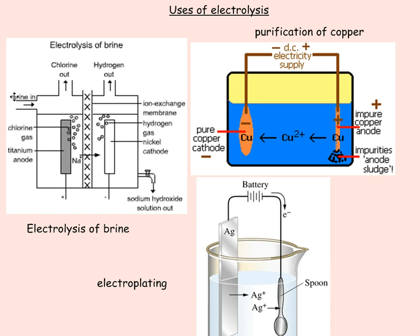Here we've got the three different types of electrolysis that you need to learn about. This one, electrolysis of brine and what useful products it makes. This one is the purification of copper and this one is when you do electroplating which is plating, gold plating, silver plating, things like that.